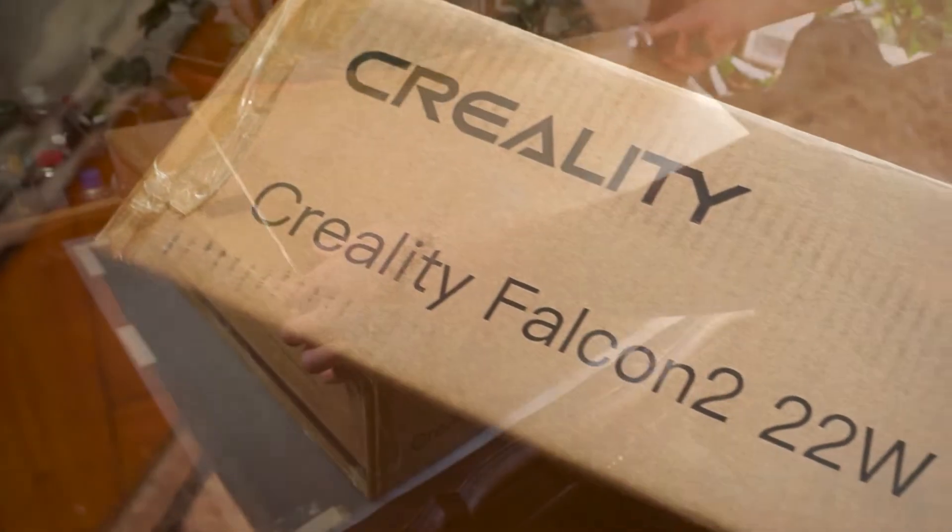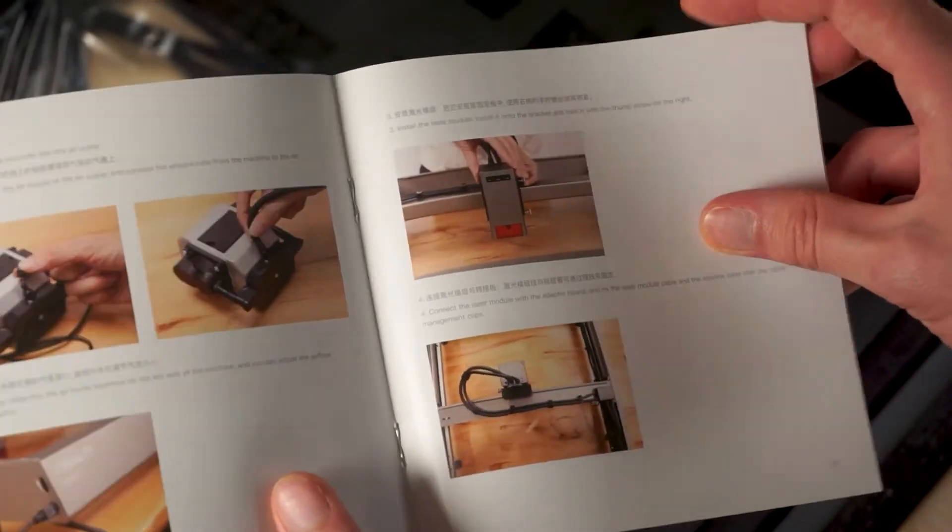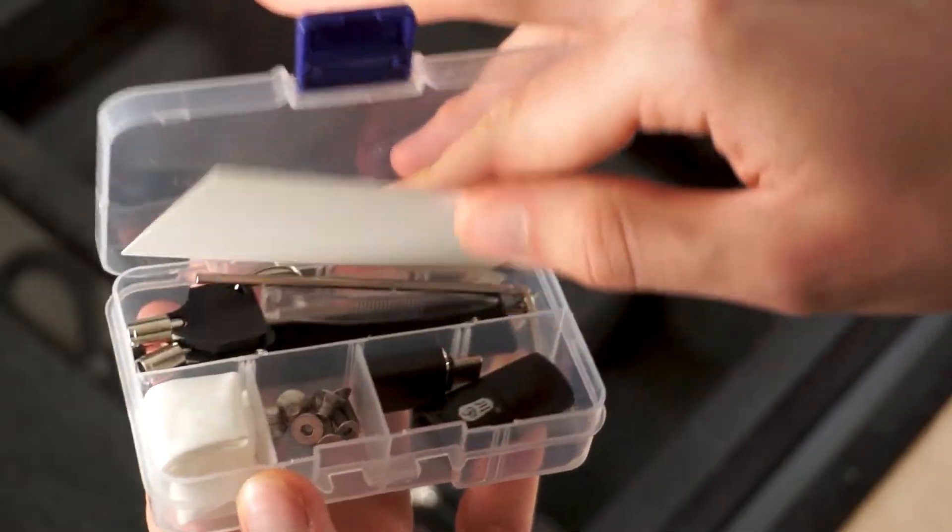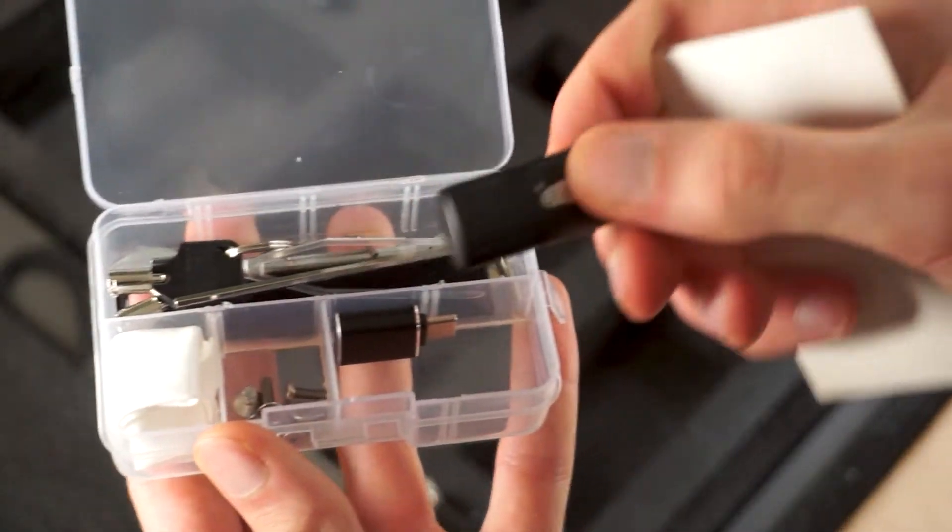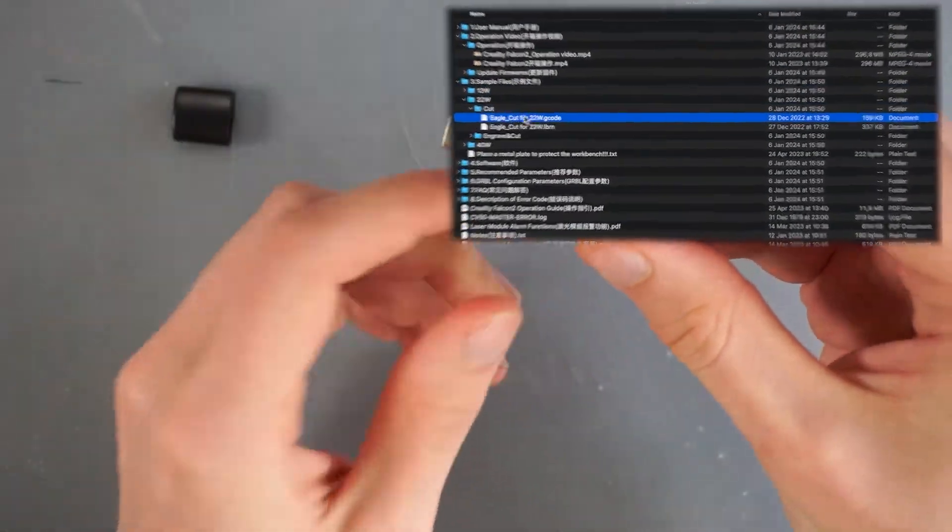Let's start by checking out what's inside the box. There is a manual, a bunch of small tools to use with the machine, including a micro-SD card containing additional video tutorials, PDFs, as well as software presets.